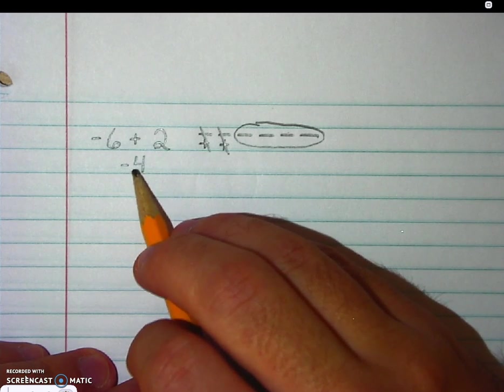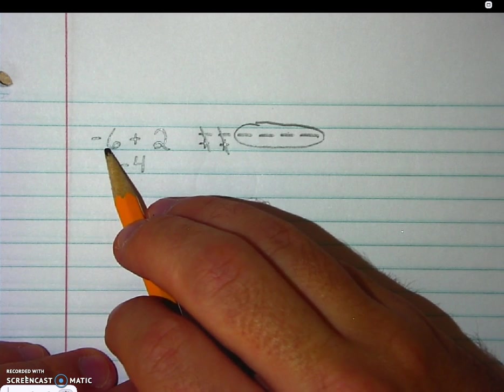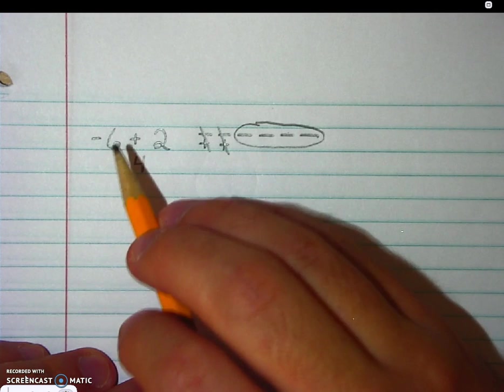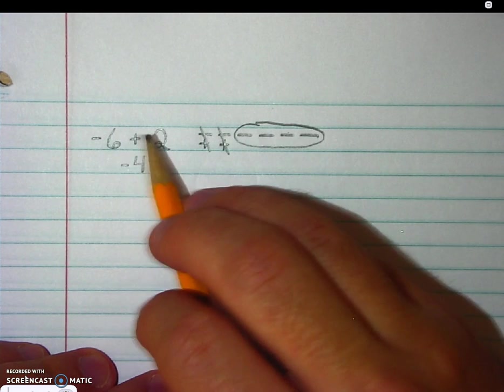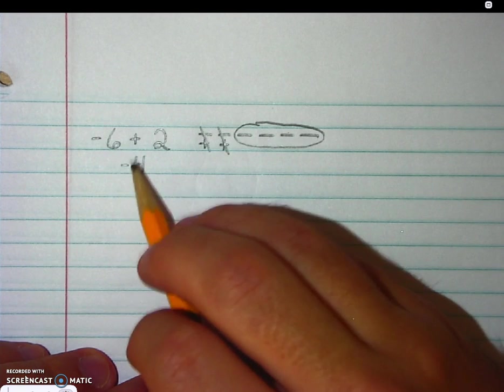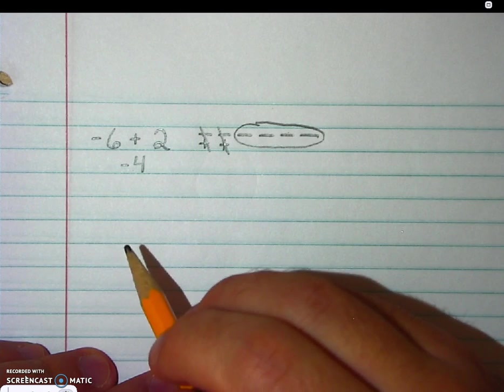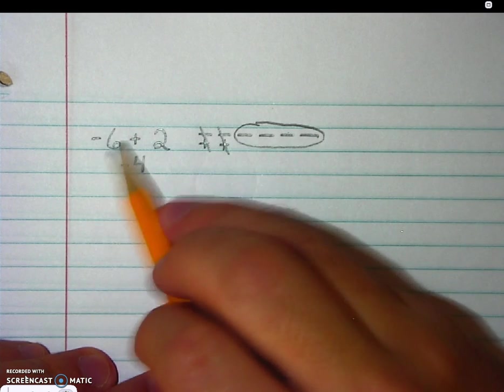Our answer is negative because the greater absolute value was our negative integer. So the general rule is to subtract the two numbers and keep the sign of the integer with the greater absolute value. 6 minus 2 is 4. My answer is negative because of this absolute value.